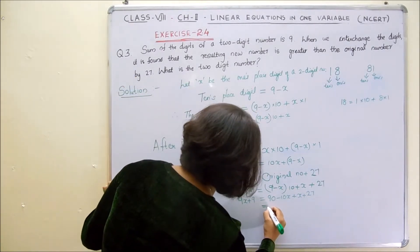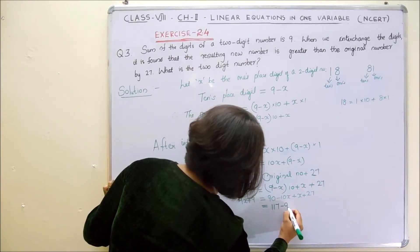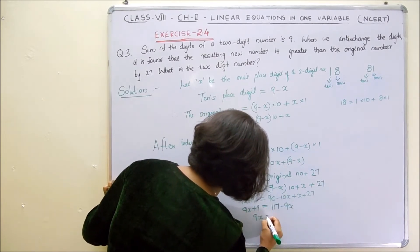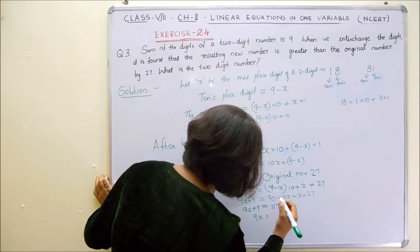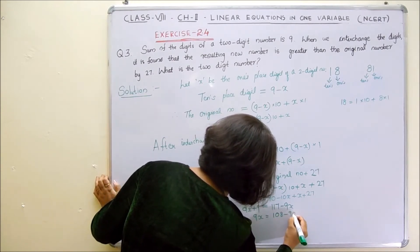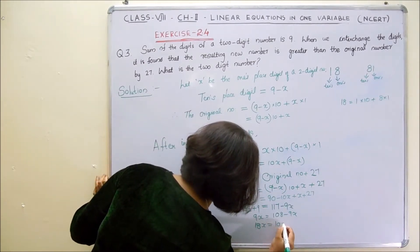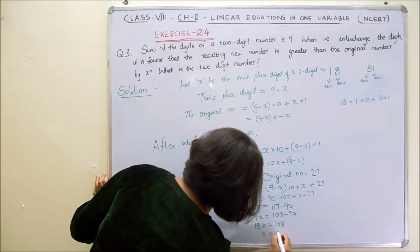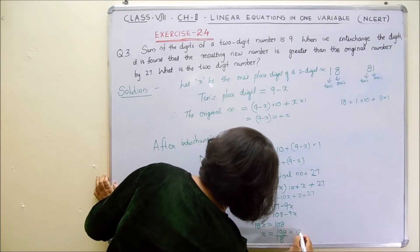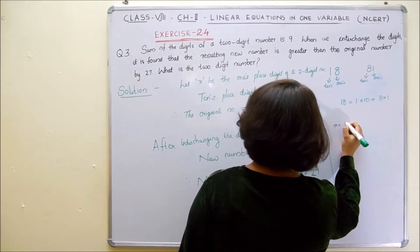we get 9x plus 9 equals 90 minus 10x plus x plus 27, which is equal to 117 minus 9x. This side becomes 9x plus 9. So 9x would be 117 minus 9, giving 108 minus 9x. So 9x comes to this side, it becomes 18x equals 108. Then x equals 108 divided by 18, which is equal to 6.